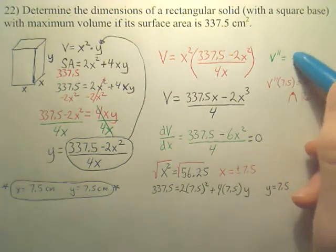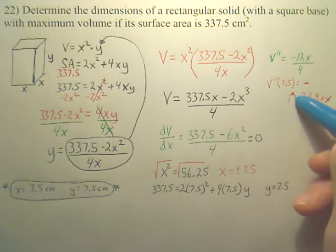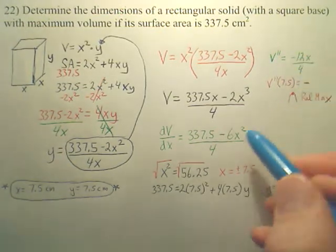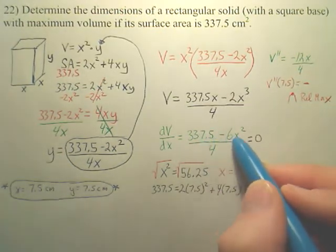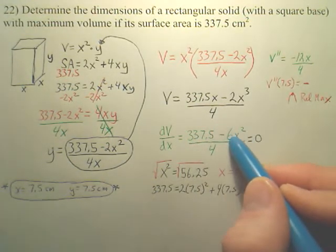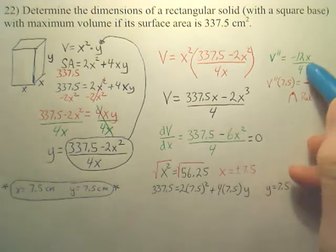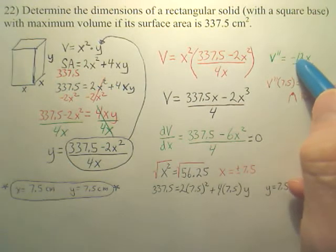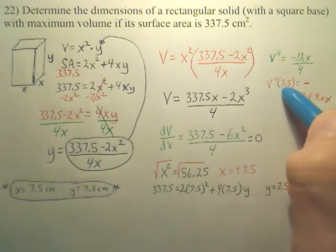And the way I verified it actually is the max is I used second derivative test. You could have used first derivative test. Now, isn't this pretty easy to get a second derivative? Doesn't this just drop out when you derive it? Doesn't this just become negative 12x, and the 4 stays? That's an easy derivative. And then I could plug in 7.5.